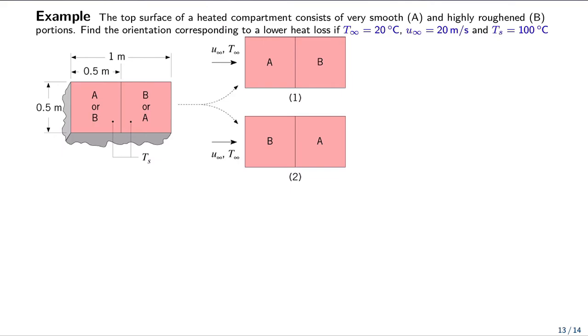This example consists of two compartments, A and B, that are organized sequentially. One of them is very smooth, compartment A, and the second one is highly roughened, so it's compartment B.